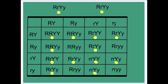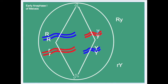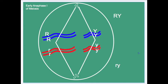The possible gametes included four possibilities, each having an equal chance of coming into existence following meiosis. Big R segregates with big Y into one gamete because of the random assortment of chromosomes, or big R segregates with little y with an equal chance, allowing for the gametes big R little y and little r big Y to have an equal chance of forming as big R big Y and little r little y.